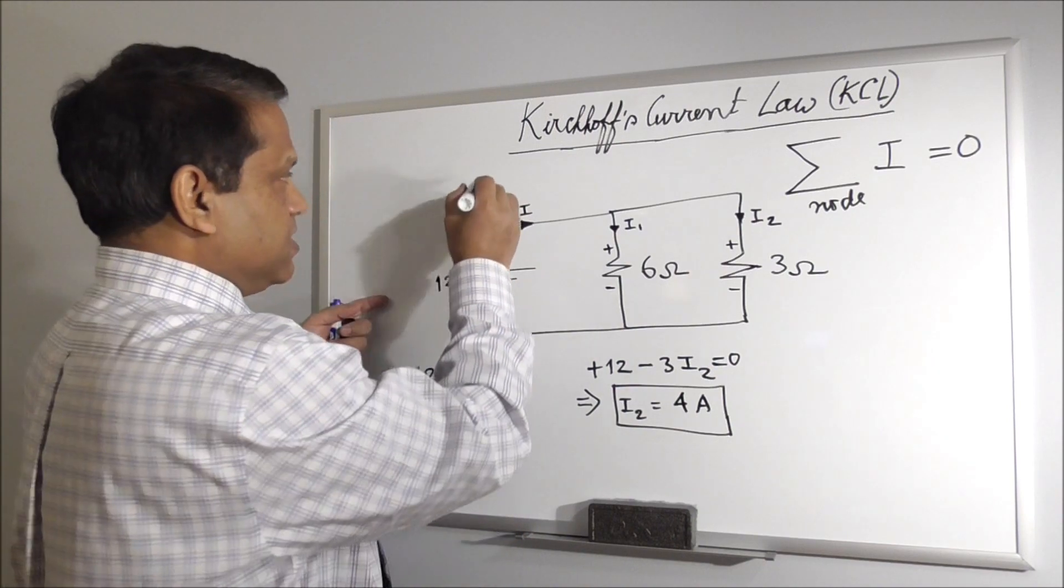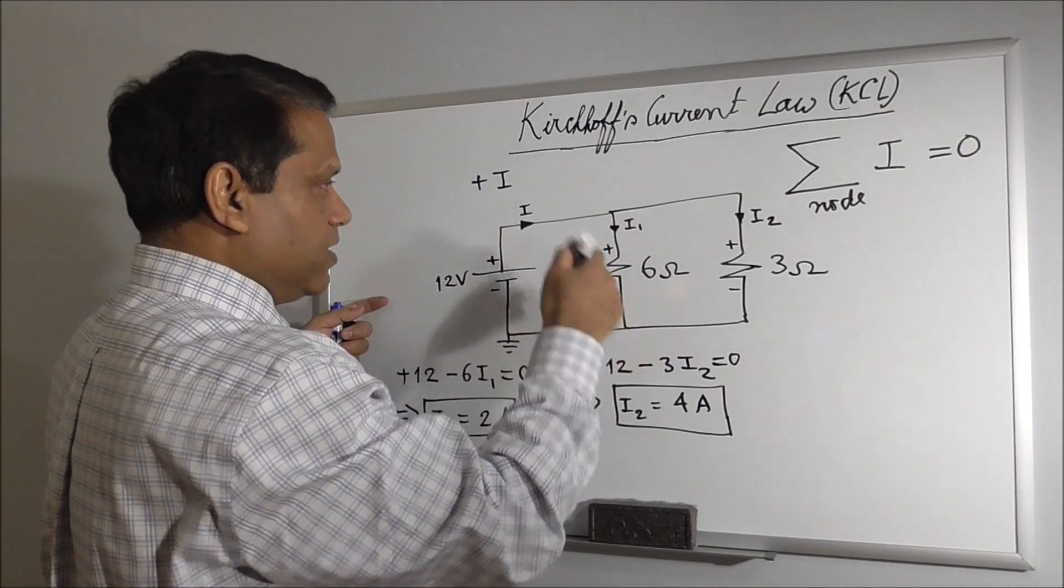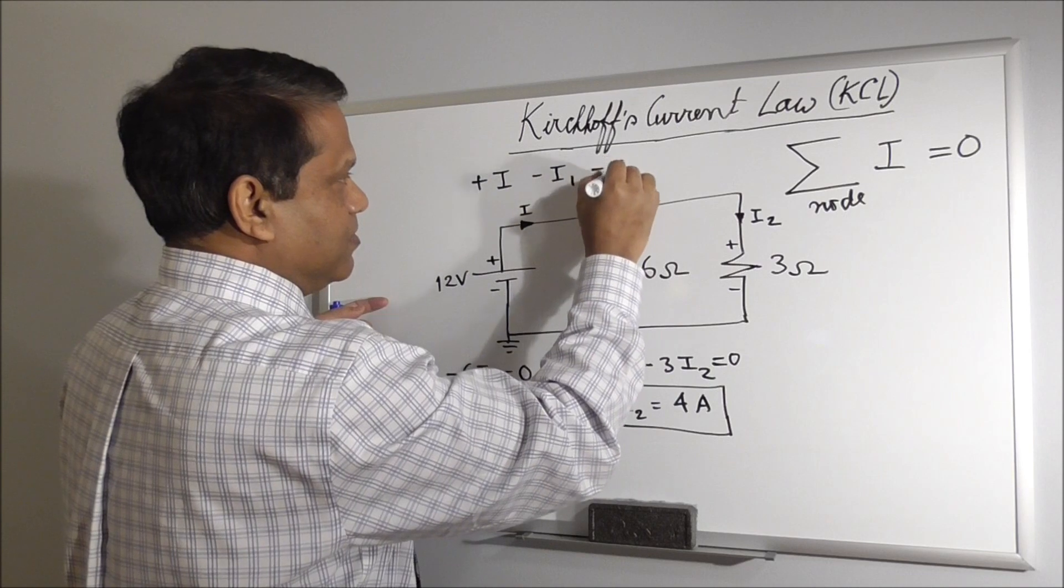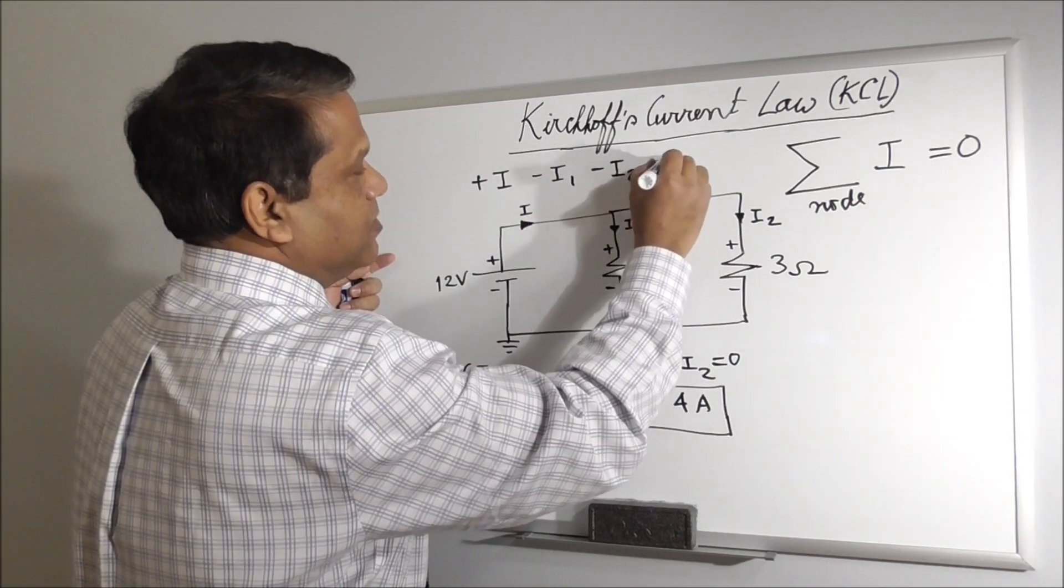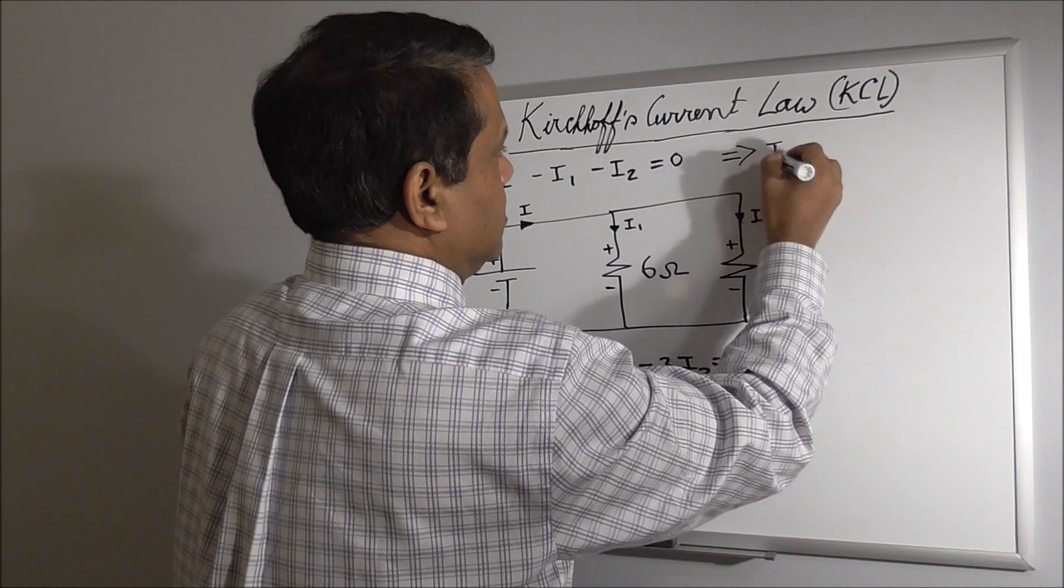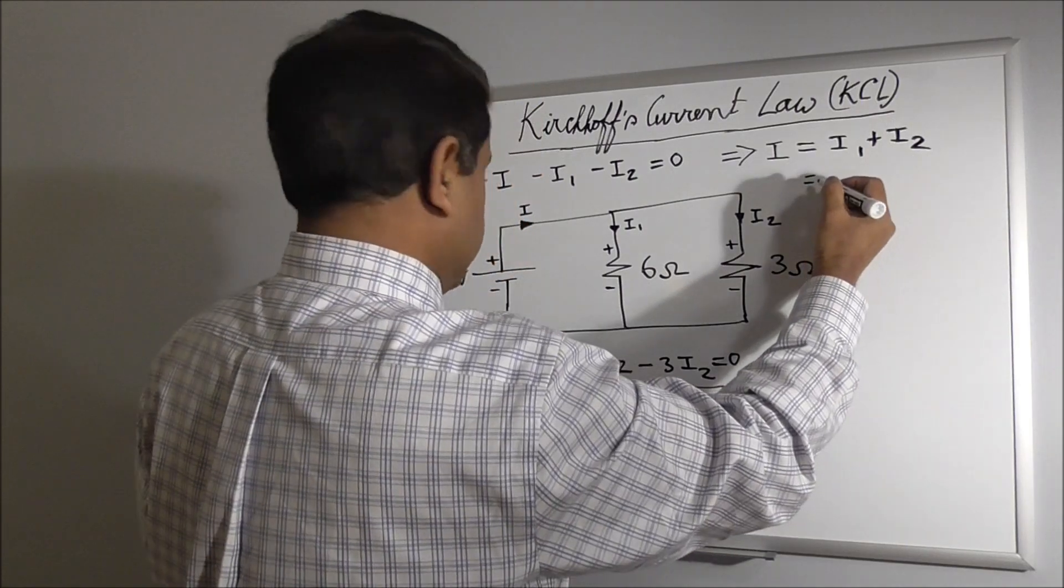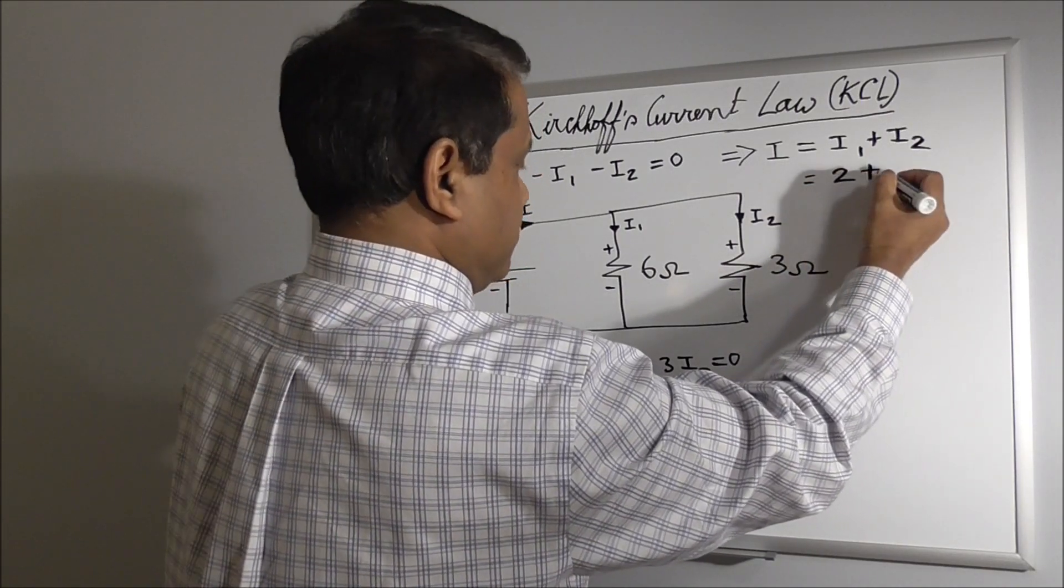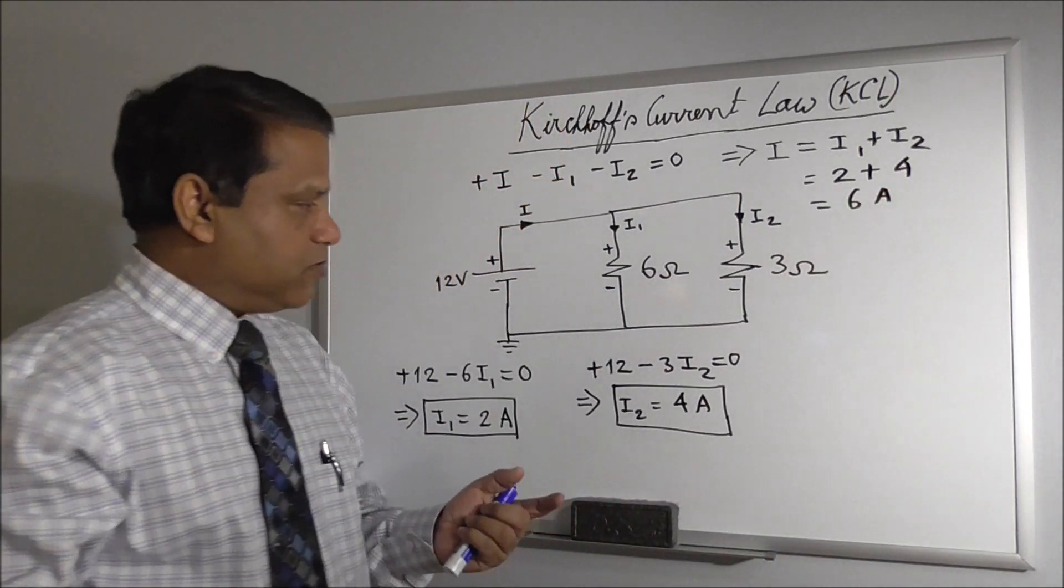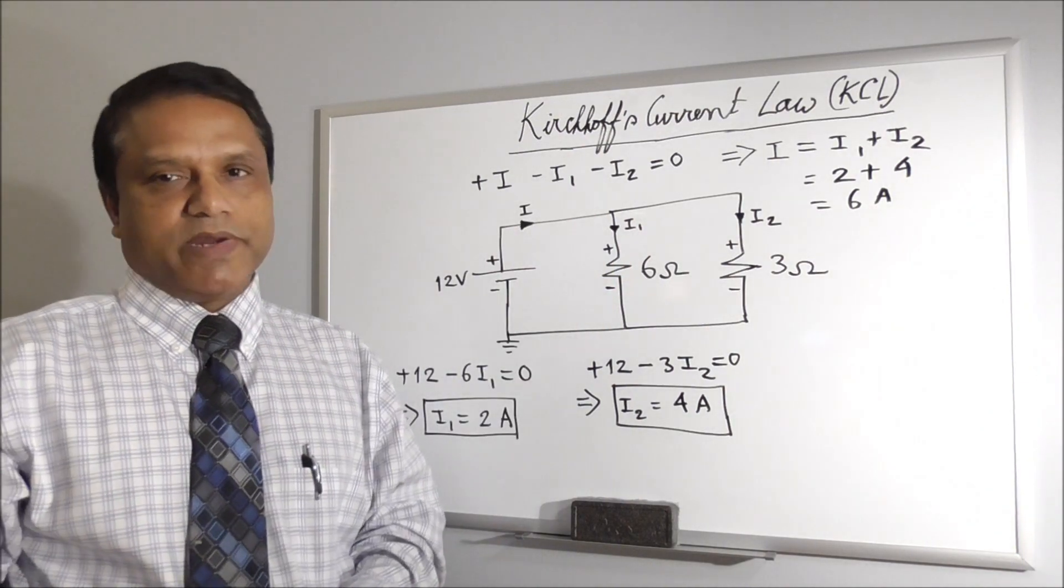So I is incoming and that is positive plus I. And this is outgoing minus negative minus I1. And this is outgoing minus I2 equal to 0. So I is equal to I1 plus I2, 2 plus 4, 6 Ampere. So what we predicted, it will be 6 Ampere, 2 plus 4. That's what we are getting here.